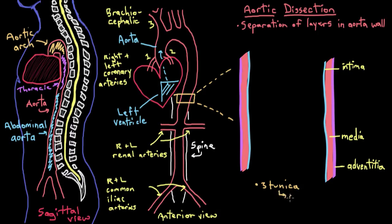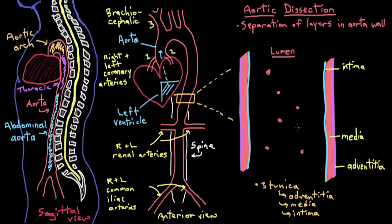So, three layers: the outer layer that keeps the aorta in place, the media which is the really thick muscular layer, and the intima which is the really thin inner layer. This is our lumen, where the blood flows through the aorta. The heart is pumping blood out at pretty high pressure every second, meaning the aortic wall is exposed to really high pressures and shear stress, which makes it pretty susceptible to injury purely from a mechanical stress point of view.